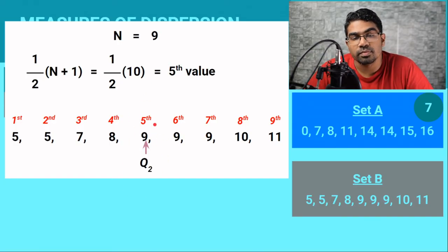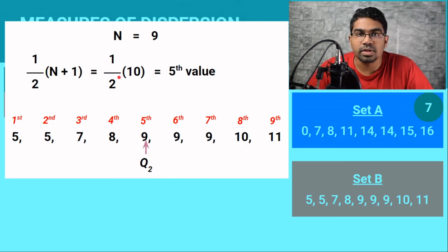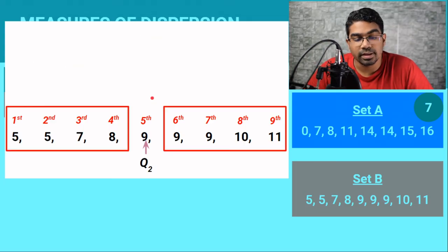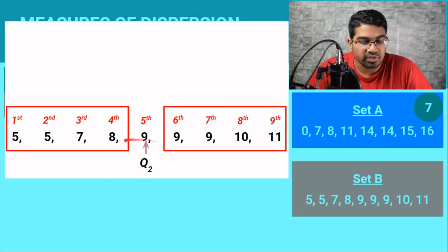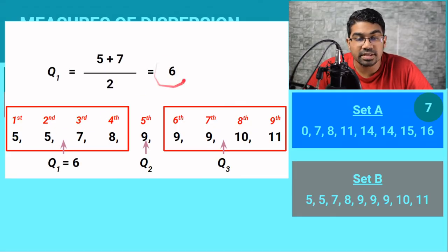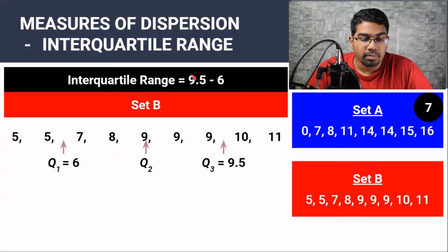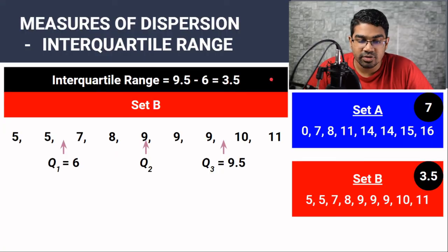This works the same way when finding the first and third quartile. If the number of data in the first half is an odd number, then we use the formula 1 over 2 times (n + 1). But in this case, when we divide the data into two halves, we get an even number of data on both sides. So we use the same method as before. Q1 will simply be (5 + 7) divided by 2, which is 6, and Q3 will be (9 + 10) divided by 2, which is 9.5. The interquartile range will be 9.5 minus 6, which is 3.5.